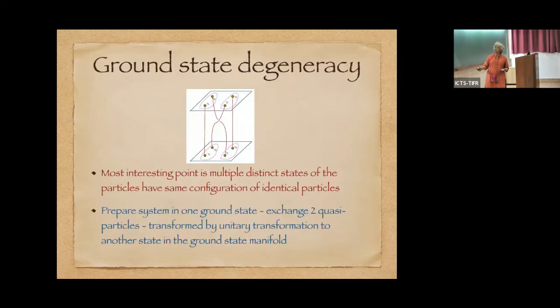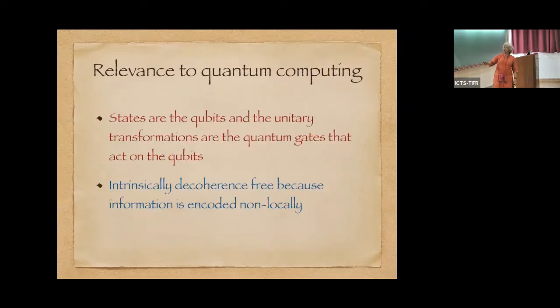And in that case, the point is that multiple distinct states of the particles have the same configuration of identical particles. That is, you have particle one here, two here, three here and four here. They may be exchanged in different ways. And each of these are multiple distinct states of these particles, although they have the same configuration of identical particles. So what one can do is actually prepare a ground state system in one ground state, then you can actually exchange any two quasiparticles and then transform by unitary transformation to another state in the same manifold. And this is the reason that these non-abelian anyons are relevant to the field of quantum computation.